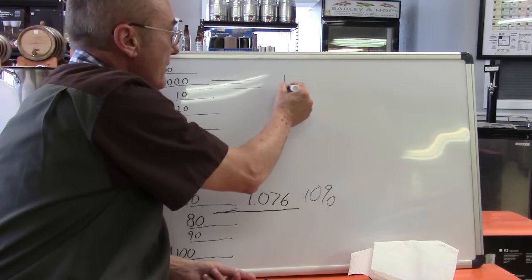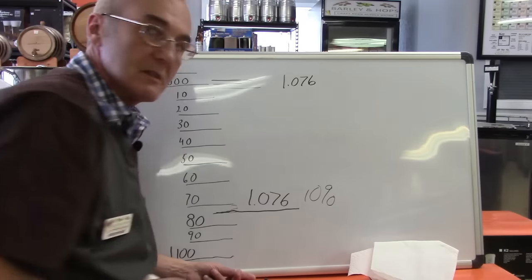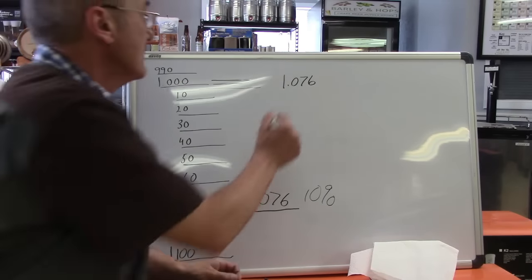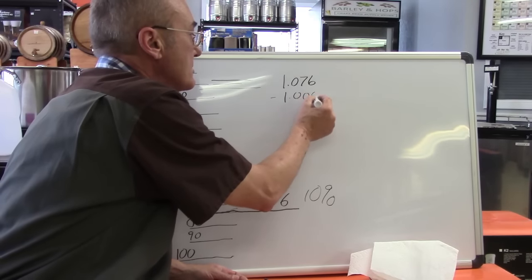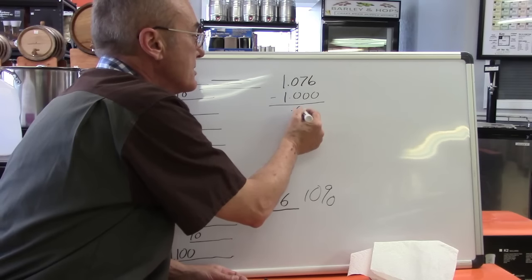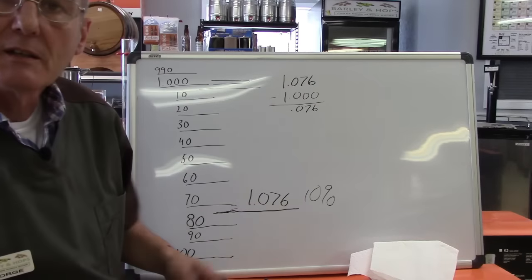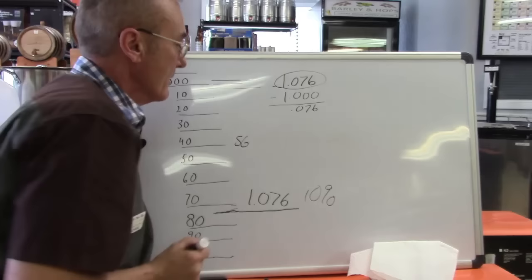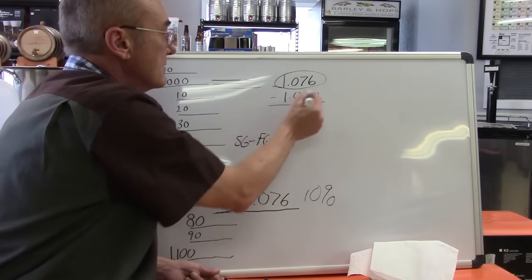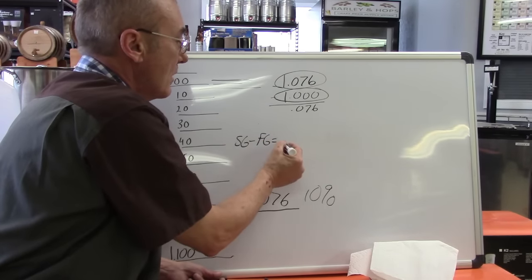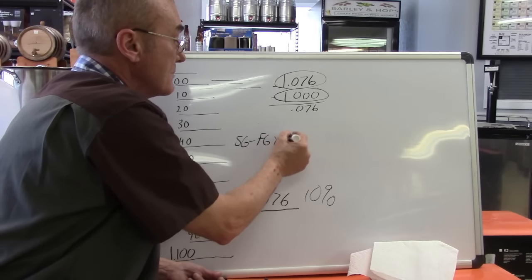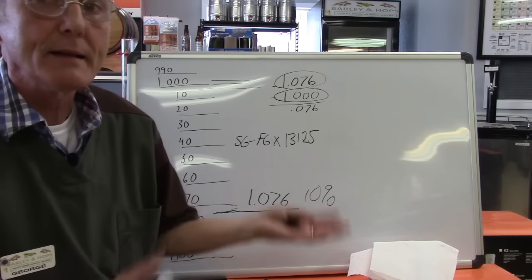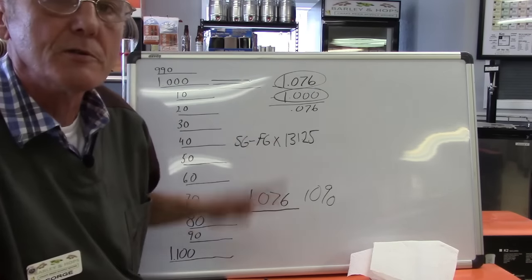If we take our initial gravity, 1.076, and that's where it started, once it finishes fermenting, let's say it fermented all the way down to 1.000, and we subtract 1.000, we end up with 0.076. Now here's the way this works. Our starting gravity right here minus our final gravity right here equals, well, that number times 131.25. It's a constant, just don't worry. It just works that way. There's a couple of different ways to do this. It's the easiest.